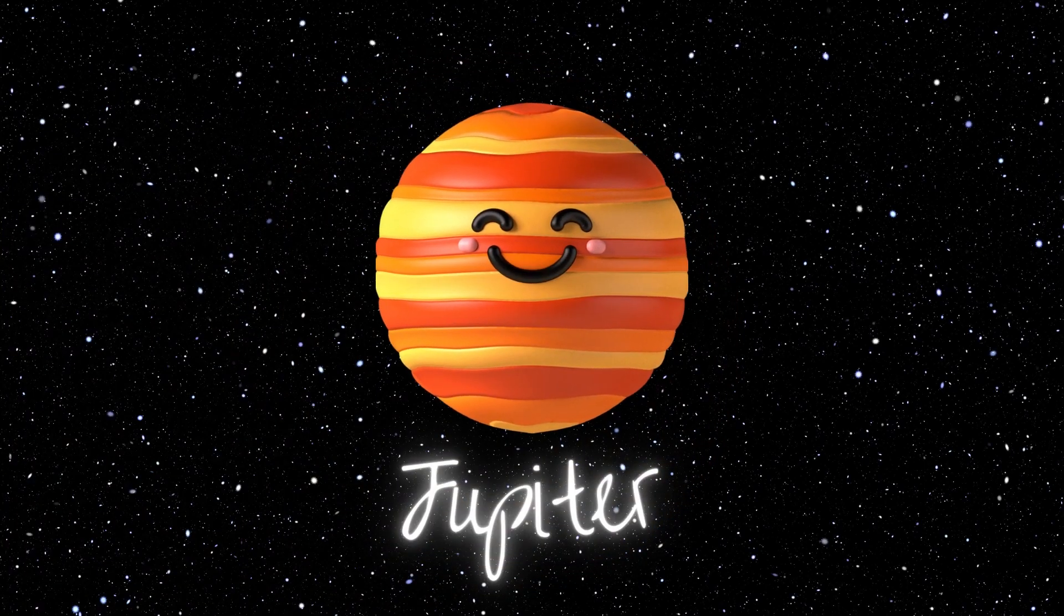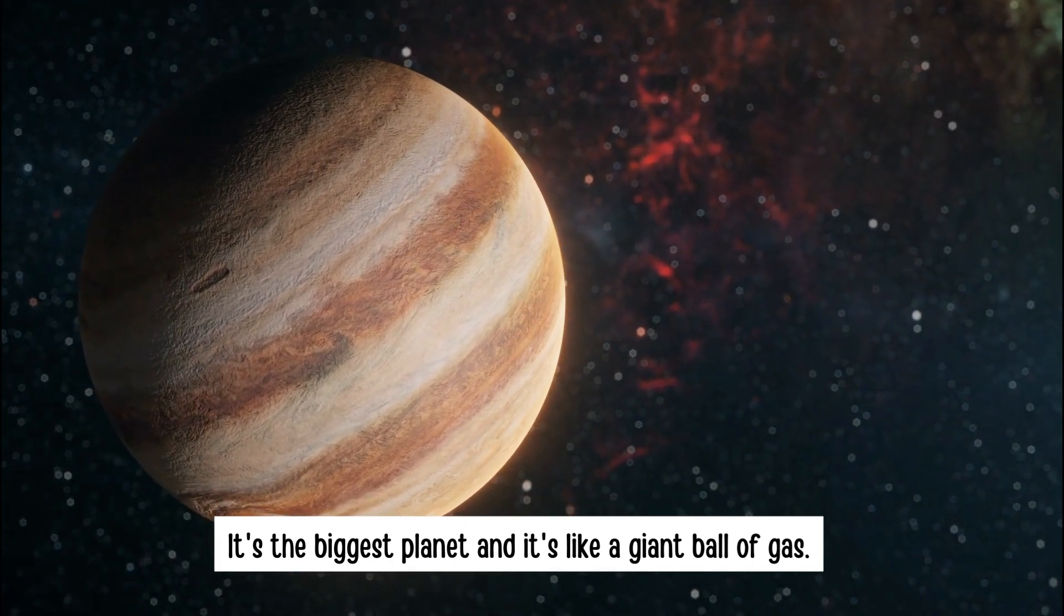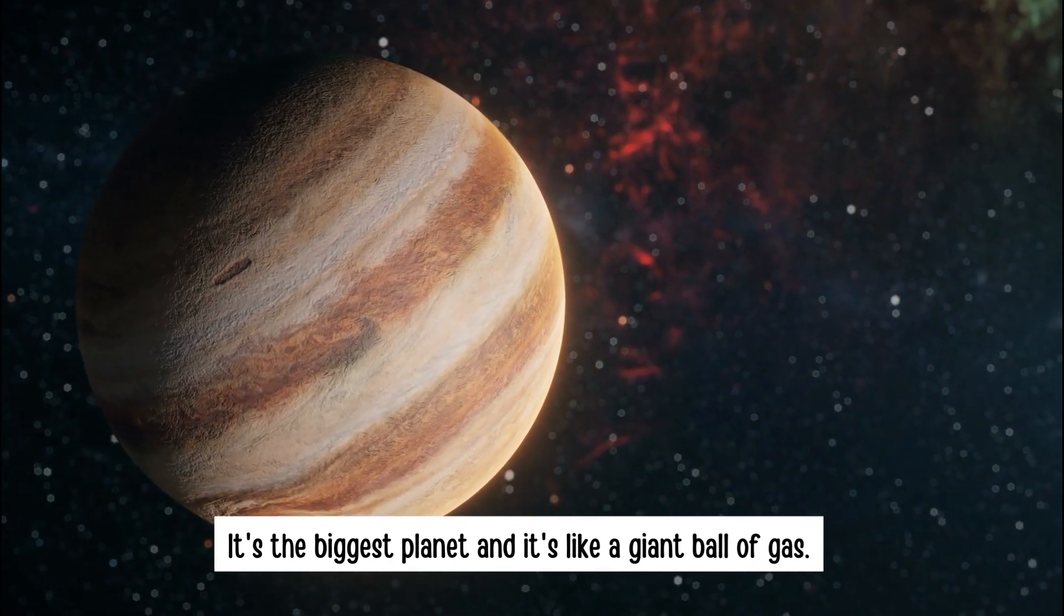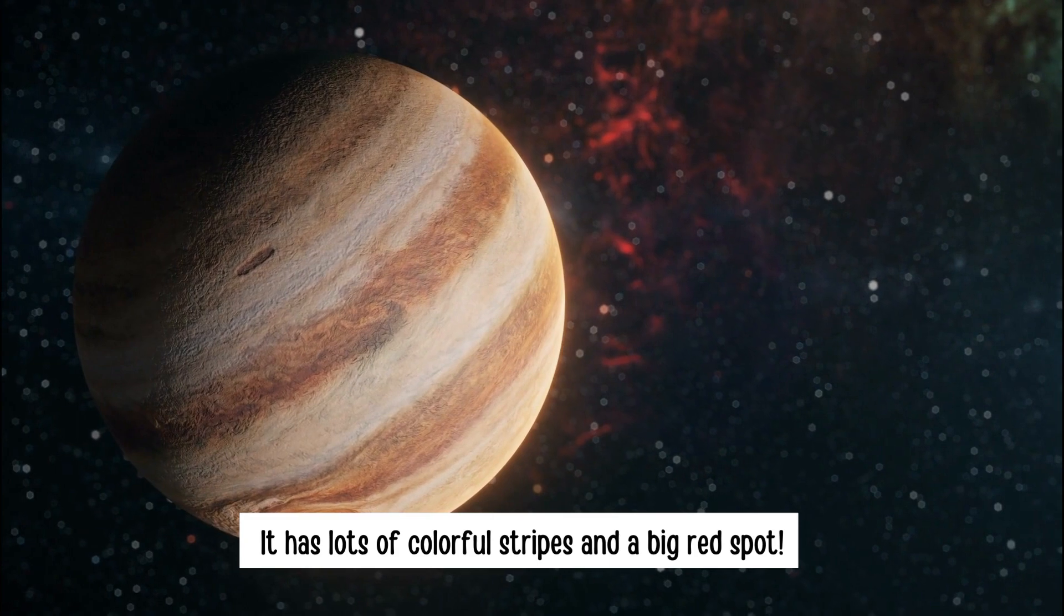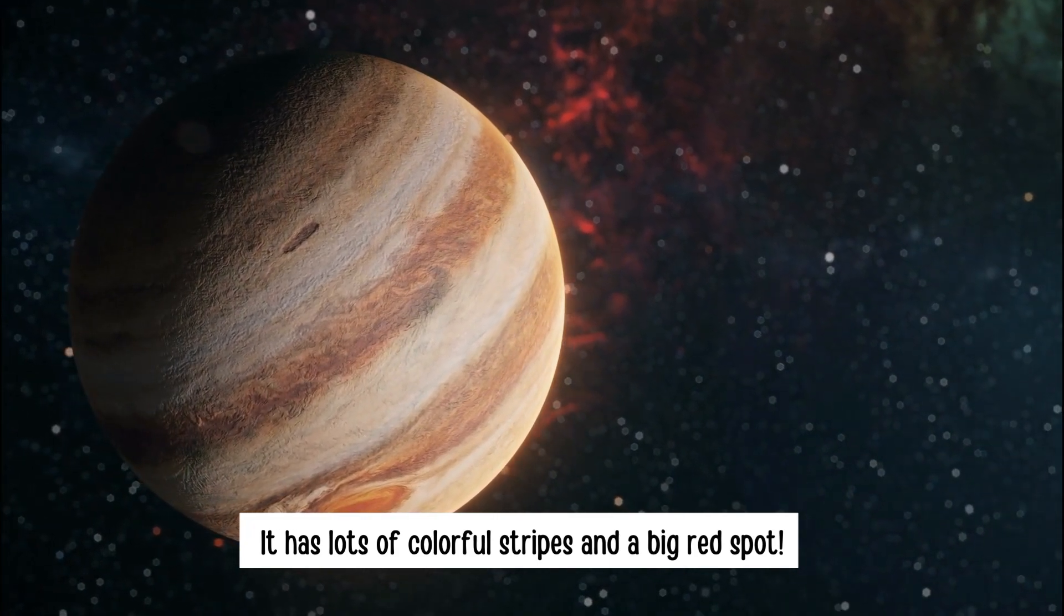Jupiter. It's the biggest planet and it's like a giant ball of gas. It has lots of colorful stripes and a big red spot.